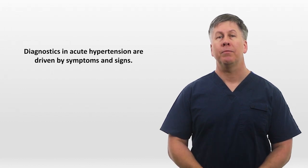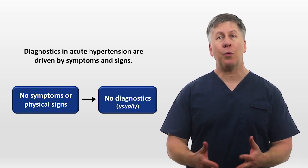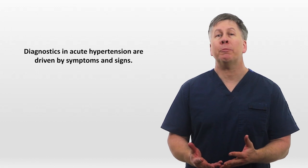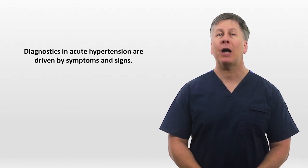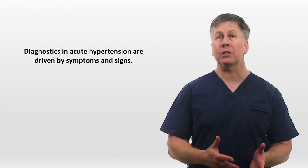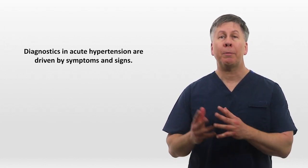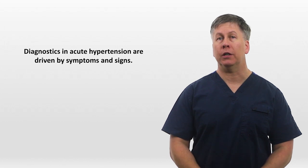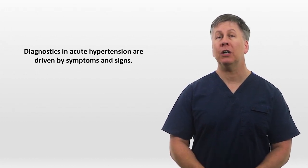When it comes to the workup of acute hypertension, diagnostics are driven by symptoms and signs. No symptoms or physical signs usually means no additional diagnostics are necessary. Otherwise, indicated tests flow naturally from your bedside assessment. So if the patient has chest pain, an ECG and troponin. Shortness of breath means a chest x-ray, as well as an ECG and troponin. Acute hypertension with either a focal neural finding or confusion plus somnolence should be evaluated with a head CT. The one trickier situation is the combination of acute hypertension, confusion, and agitation. Most of these patients do not require neural imaging, but some might, depending on the suspicion for a condition like PRES or an atypical presentation of an ischemic stroke or hemorrhage.